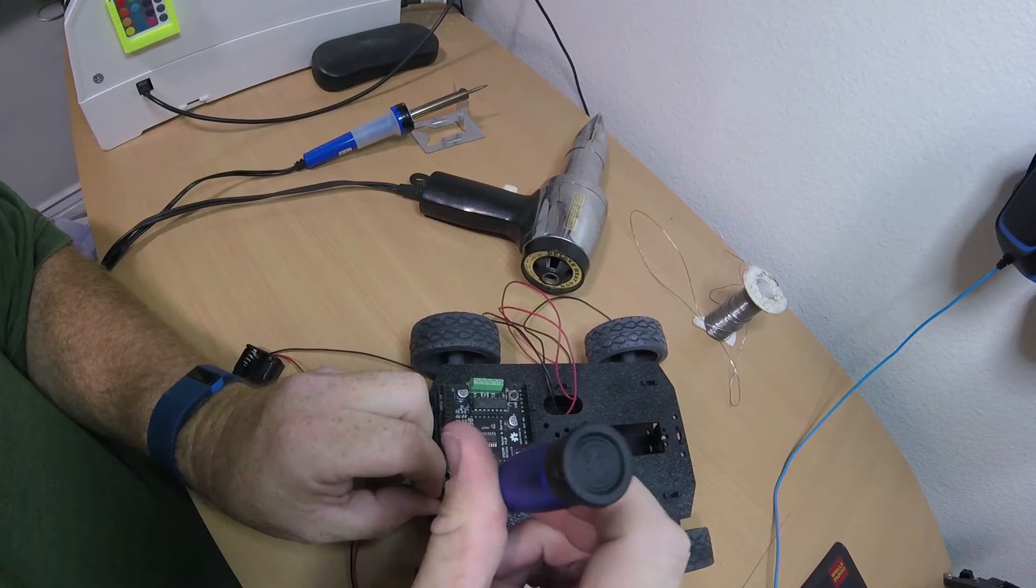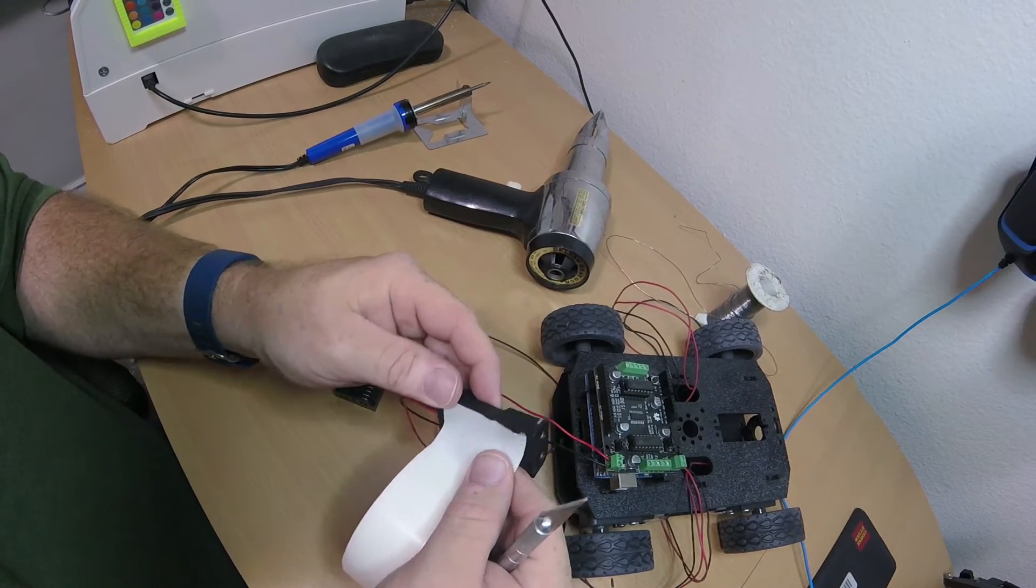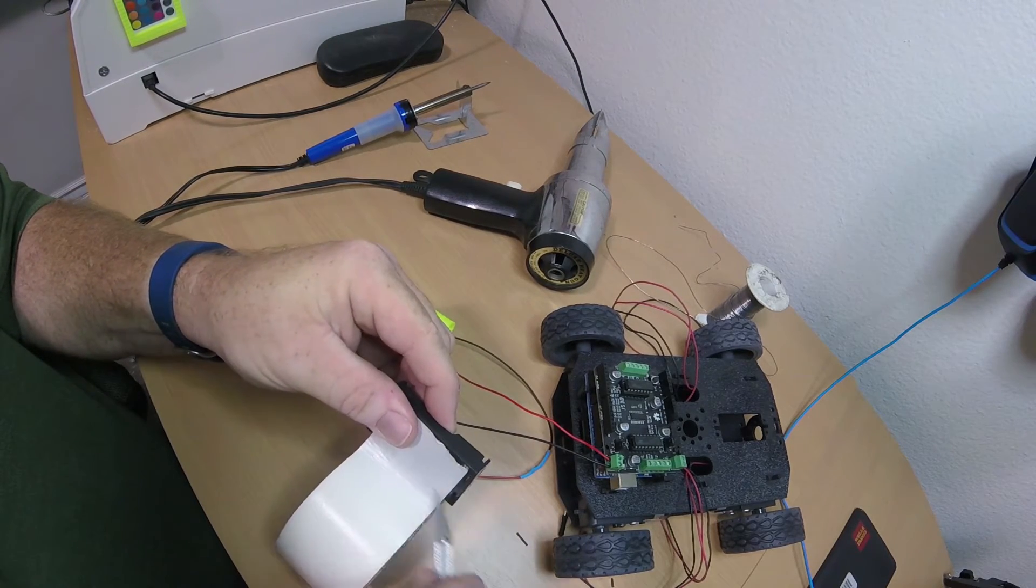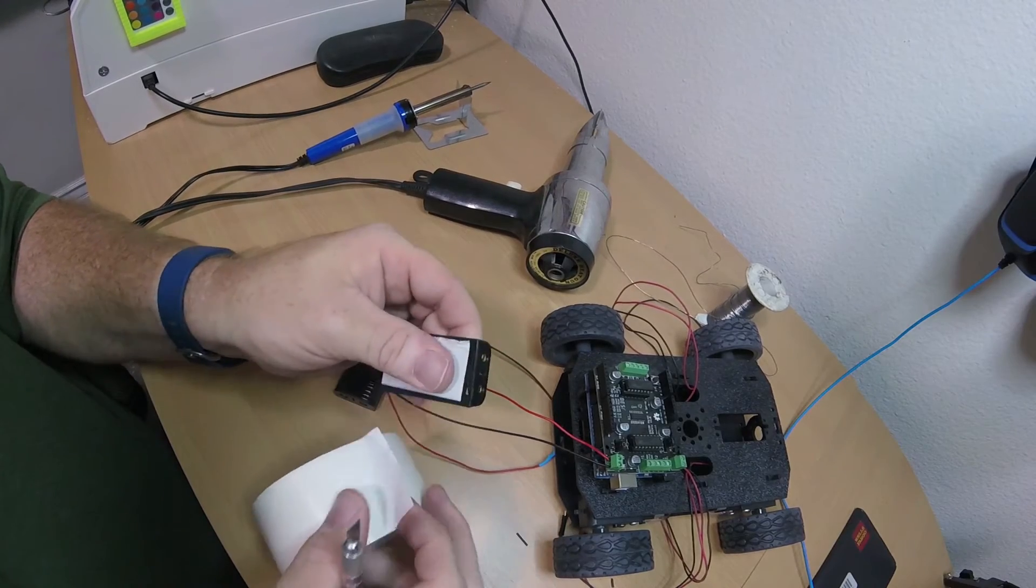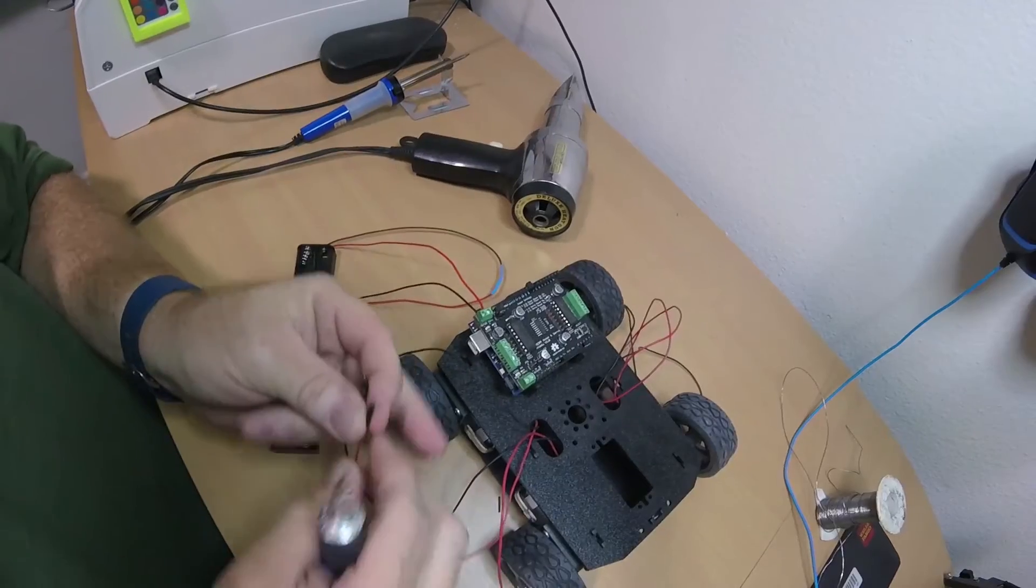Next, I went ahead and added carpet tape to the back of both battery holders, as well as a 9-volt battery. The battery holders will power the motor shield. The 9-volt battery will power the Arduino. This is just temporary, so I'm not going to go hog wild with it.